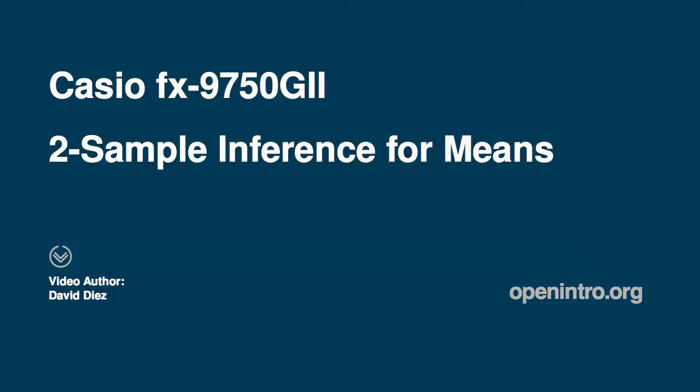We'll cover how to run a hypothesis test and construct a confidence interval for a difference of two means using a Casio FX9750 graphing calculator in the context of an example.